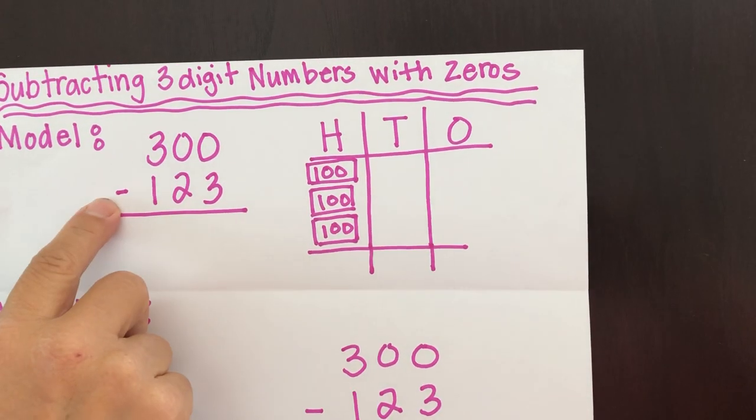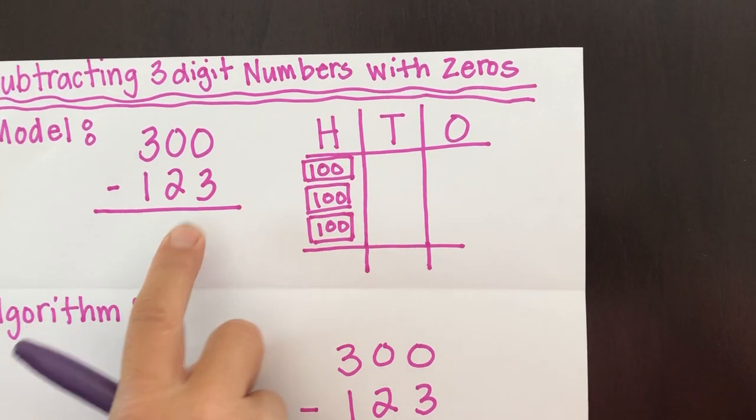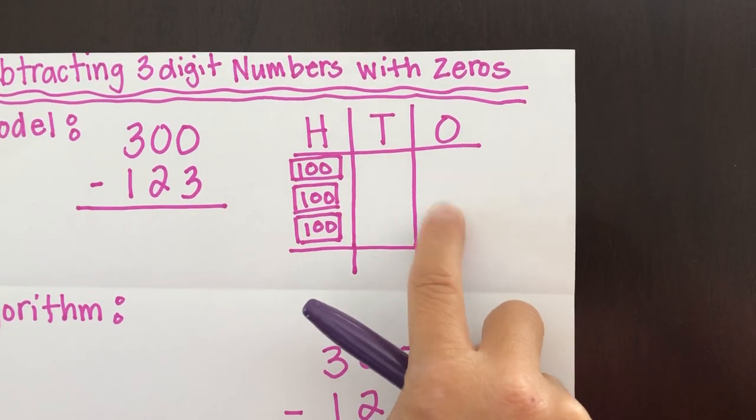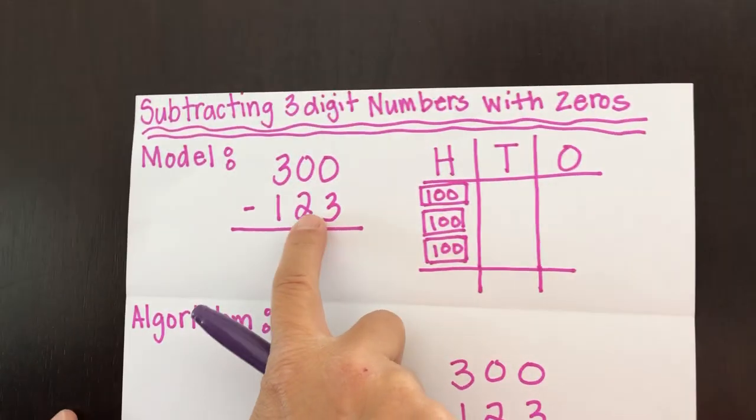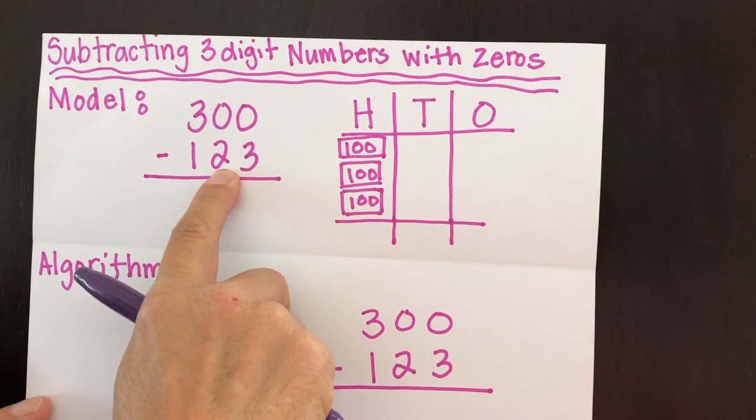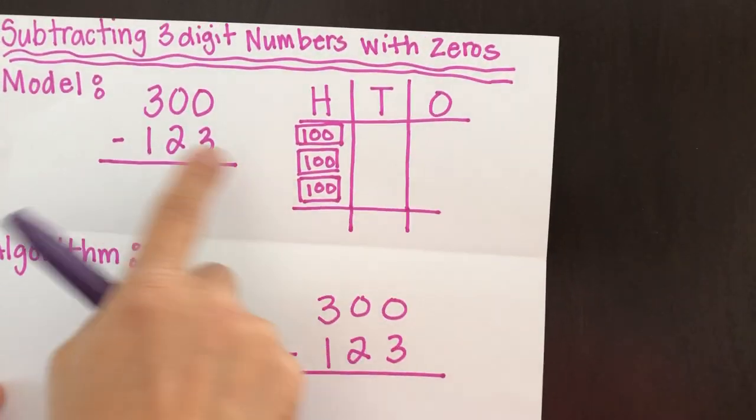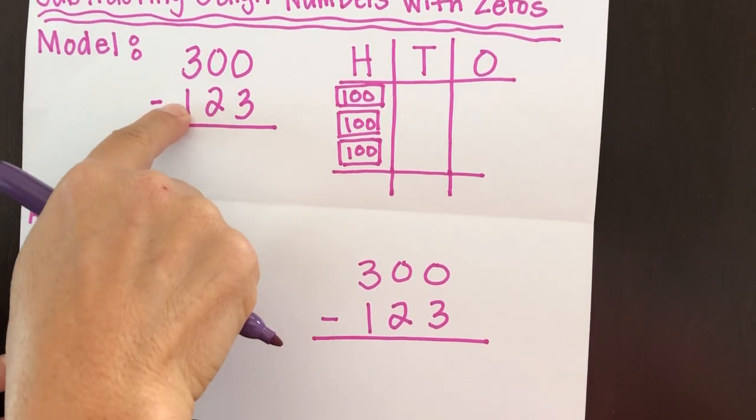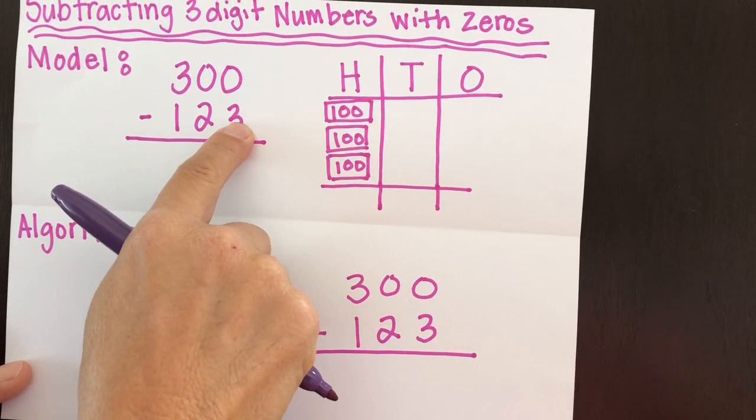So the next step is now we're going to subtract. We're going to subtract 123. So when we start at the ones column, we can't subtract three from here because we don't have anything to subtract. And if we go to the tens column, we can't subtract two from the tens column because we don't have anything there. We have no value. But we have hundreds.